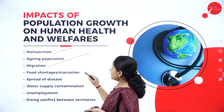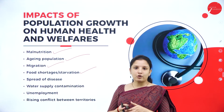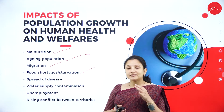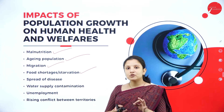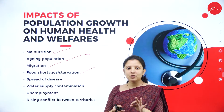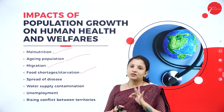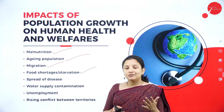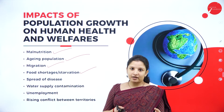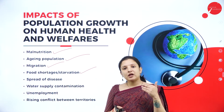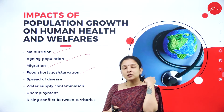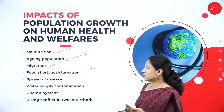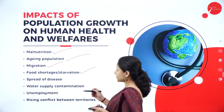Next, food shortage or starvation can occur. A lot of food is wasted in godowns due to improper distribution of food. When population is quite high, the demand for food is also very high, but agricultural fields will not be able to provide enough food for the high population demand. Therefore, it will lead to food shortage and starvation.